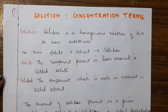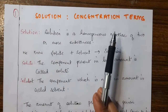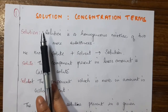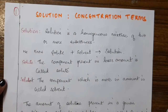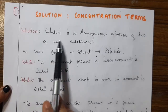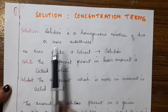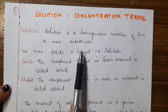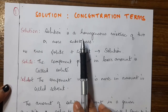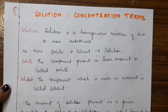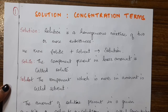Today we'll learn about the different terms which express the concentration of a solution. Before that, let's see what a solution is. A solution is a homogeneous mixture of two or more substances. Homogeneous mixture means a mixture which is same throughout. For example, if you take sugar and water and mix it well, that gives you a sugar solution.